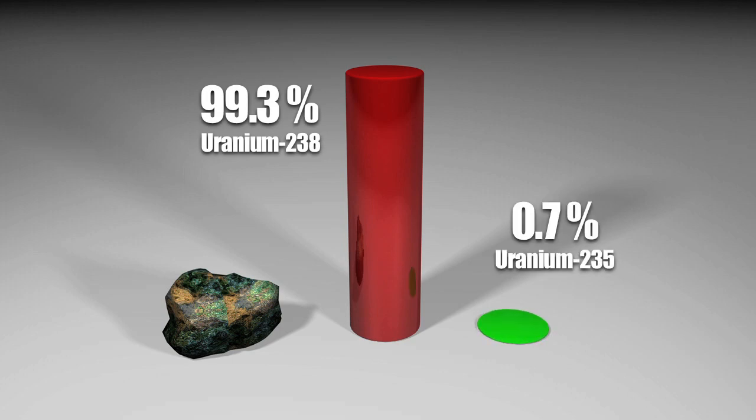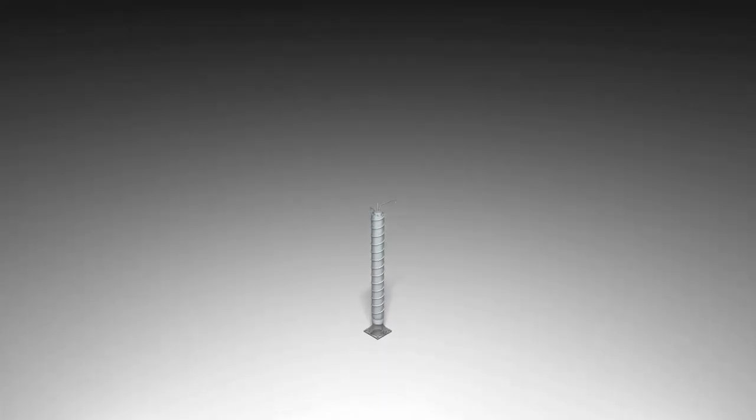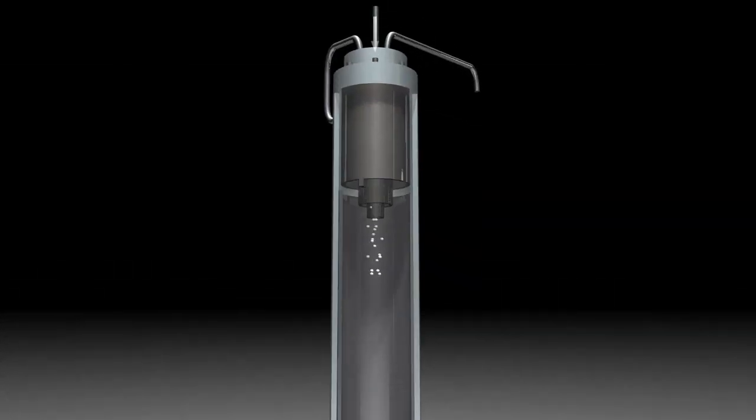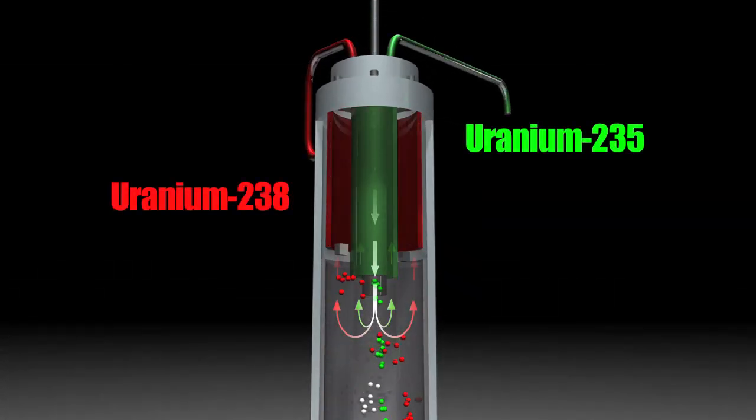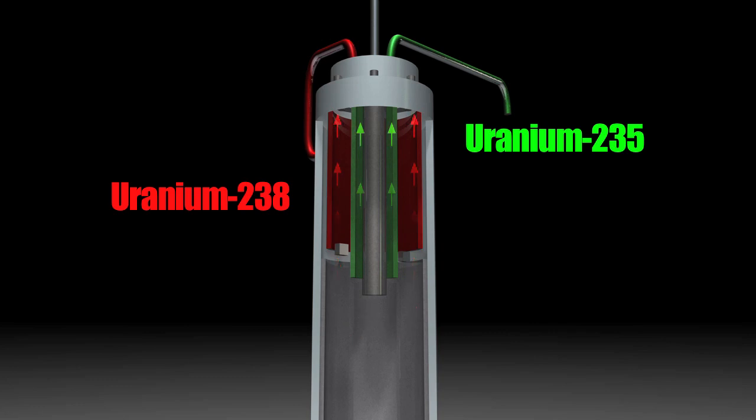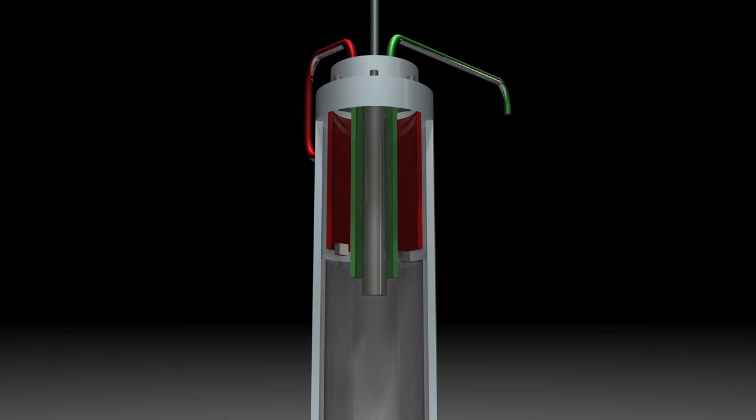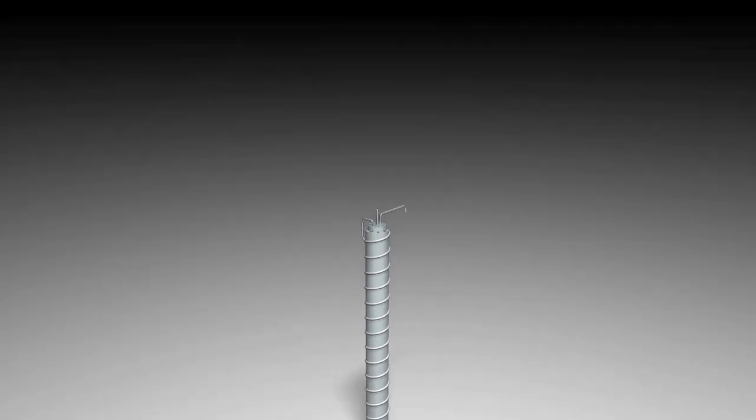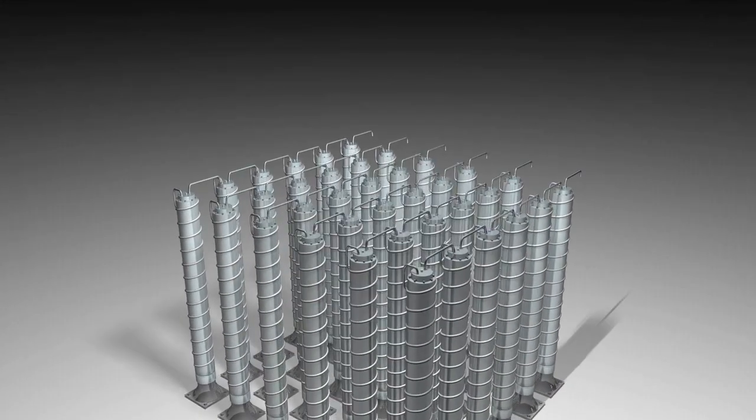Only the latter is used to produce nuclear energy. To separate the two, centrifuges are used. The heavier U-238 is discarded and the lighter U-235 is re-injected into the next centrifuge. Many centrifuges are needed to obtain a significant amount of usable uranium-235.